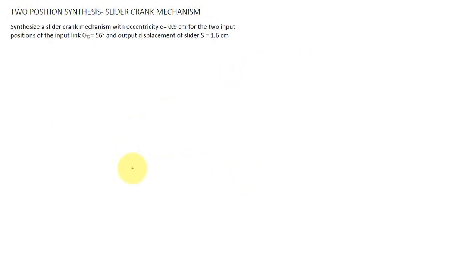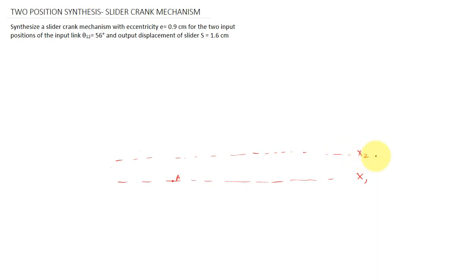First of all, you have to mark a horizontal line x1. You can assume your origin — that means where the crankshaft is — and name it point A. After that, mark another horizontal line x2. The distance between these two lines is equal to e, which is equal to 0.9 centimeter.